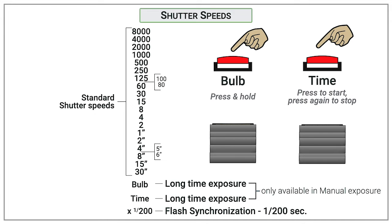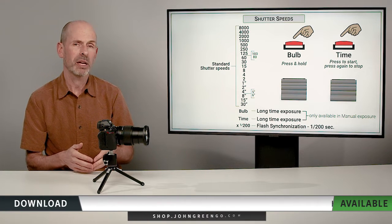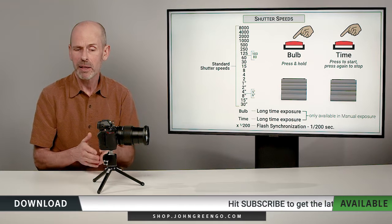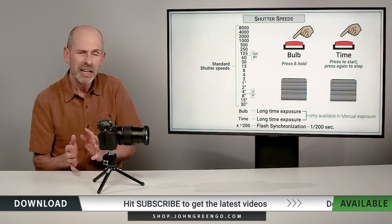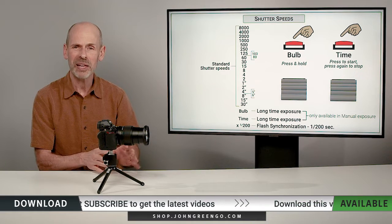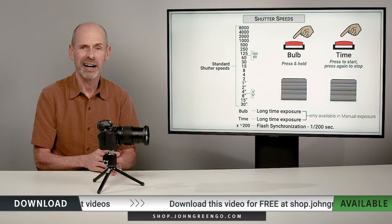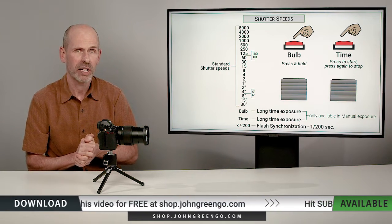There's also the time mode — one press to start the exposure and another press to stop it. And finally there's X1/200, the flash synchronization speed. This is the fastest shutter speed you can use with flash. For photographers working in a studio environment with strobe lighting, this allows you to keep the dial at the end where it's less likely to get bumped into the wrong exposure, set at 1/200th of a second.